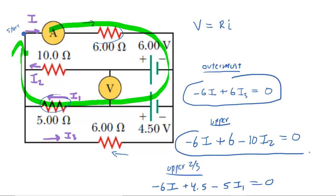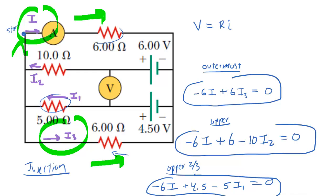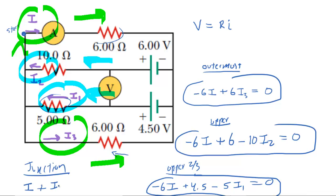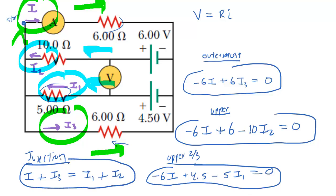Right now we have three equations generated by the loop rules, but we have four unknowns: I, I3, I2, and I1. That means we need a fourth equation, and to get it we're going to apply the junction rule. Looking at the diagram, currents I and I3 are traveling rightward through the circuit, while currents I1 and I2 are traveling leftward. The currents traveling to the right must equal the currents traveling to the left, so: I plus I3 equals I1 plus I2. This is our fourth equation.